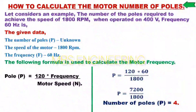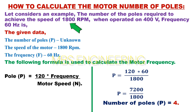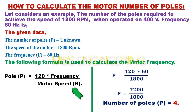To calculate the number of poles, we rearrange the formula as: Poles P equals 120 multiplied by frequency divided by motor speed N. Let's consider an example: the number of poles required to achieve a speed of 1800 RPM when operated on 400 volts at 60 hertz frequency. Given a speed of 1800 RPM and frequency of 60 hertz, P equals 120 into 60 divided by 1800. Therefore, the number of poles is 4.